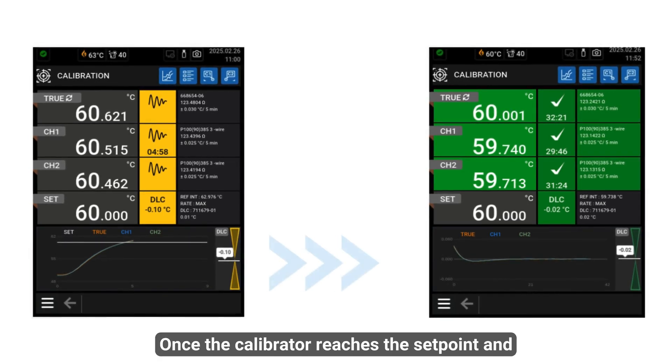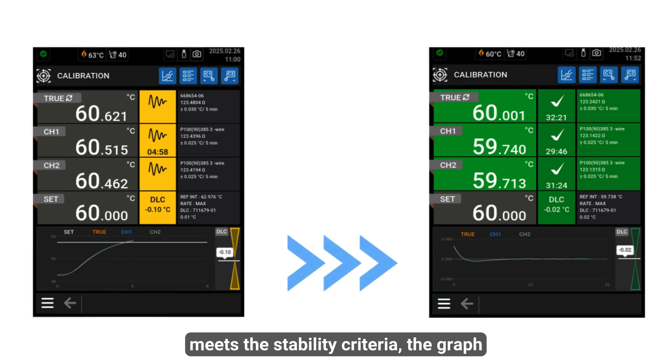Once the calibrator reaches the set point and meets the stability criteria, the graph intelligently shifts to a high-resolution relative view, magnifying even the smallest deviations for review.